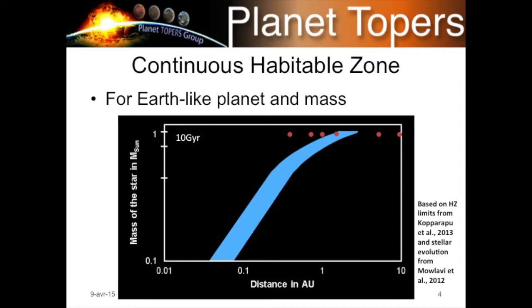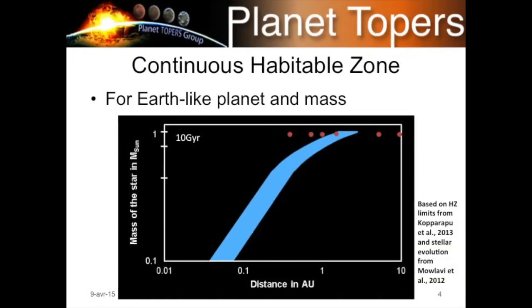This is plotted for stars of solar-like composition at different masses, showing distance to the star at one million years — very young stars — then how it changes after 4.5 billion years and after 10 gigayears. For massive stars, the habitable zone strongly shifts with time, whereas for low-mass stars it stays more or less constant, giving a large continuous habitable zone.